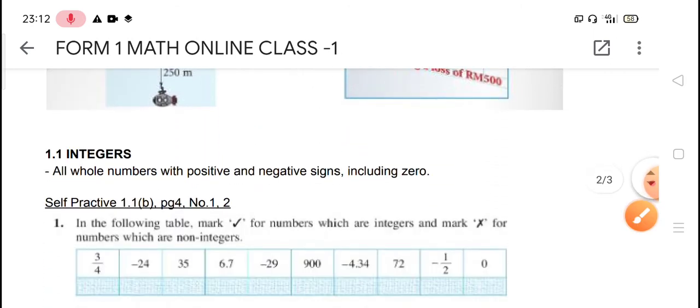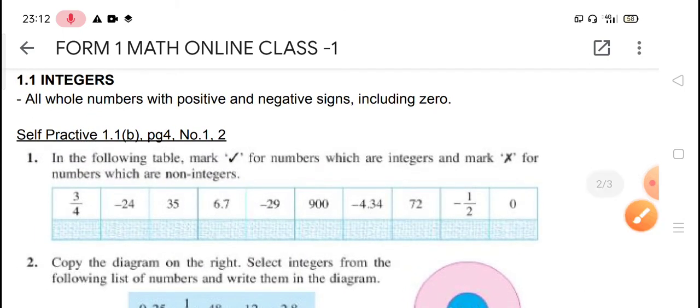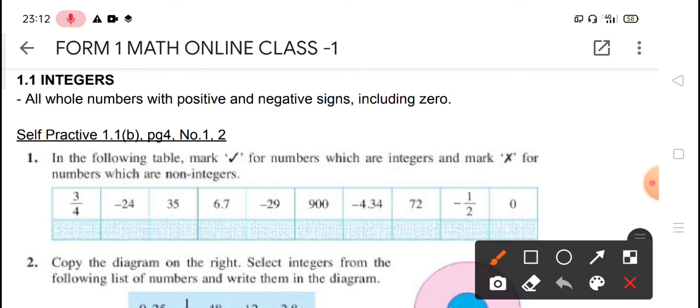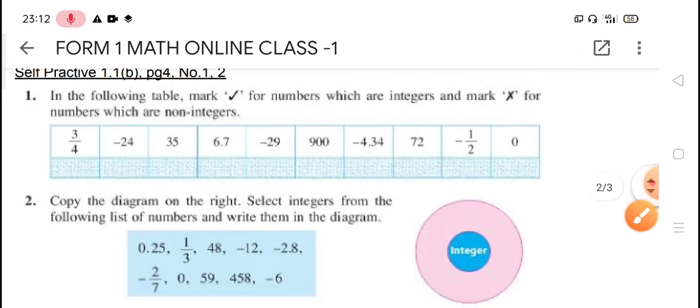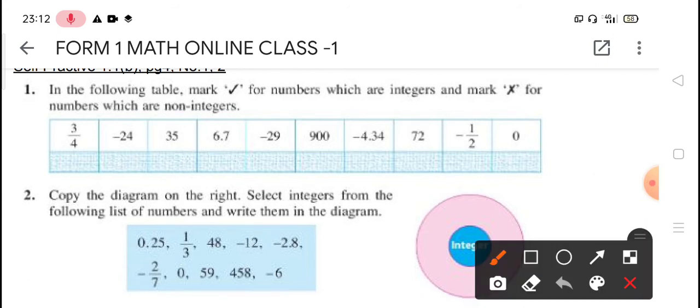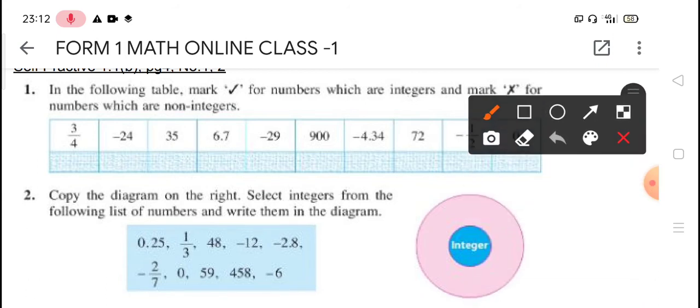Now we move on. Integer. Hopefully you still remember what we mean by integer for the first online class. Integer means all those numbers with positive and negative sign, including zero. And remember, the numbers we mean is whole number. Hence, fractions and also decimals cannot be integer. Only whole numbers. So now we look at number one, question number one. In the following table, tick for integer, cross for non-integer. So we move on. The first one, 3 over 4 is a fraction. Fraction, no, not integer, so we cross it.